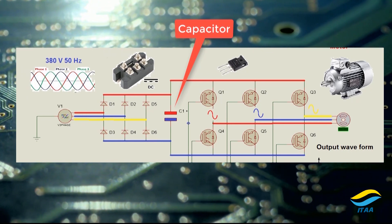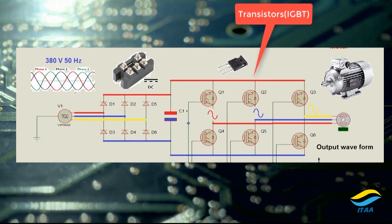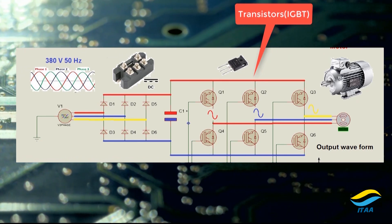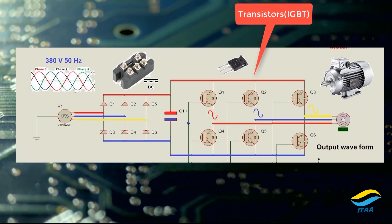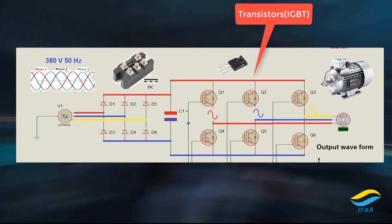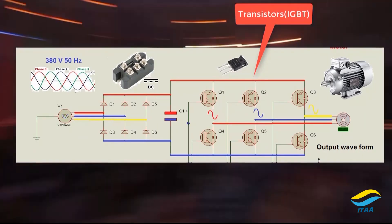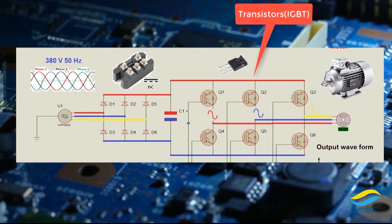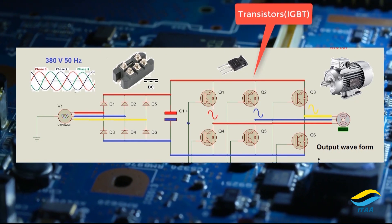Then the signal coming from the capacitor is passed through the transistors. There are six transistors or IGBTs. When this signal is passed through these transistors, it is converted back to AC. We have to understand that the transistors or IGBTs here are acting as switches.